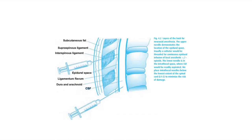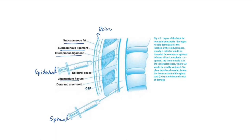This picture shows the various layers that need to be pierced for epidural and spinal anesthesia. For epidural anesthesia, you pierce the skin, subcutaneous tissue, supraspinous ligament, interspinous ligament, and ligamentum flavum to reach the epidural space. For spinal anesthesia, in addition to those layers, you also have to pierce the dura mater and arachnoid mater.